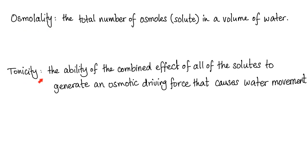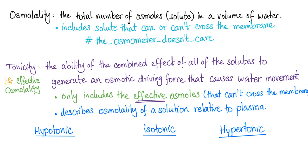What is the difference between osmolality and tonicity? The textbook will say it like this. Osmolality is the total number of osmols in a volume of water, but tonicity is the ability of combined effect of all the solutes to generate an osmotic driving force that causes water movement. Did you understand anything? Of course not. That's why you're watching. So, let's make it simple. Osmolality is easy. Get a sample of the blood, send it to the lab. The stupid osmometer is gonna measure all the sodium, the glucose, the calcium, et cetera, in the blood and will give you a number. For example, 290 milliosmols per liter.